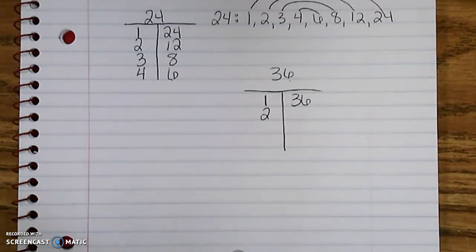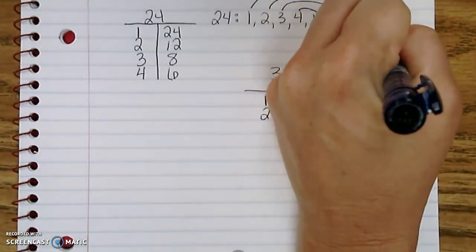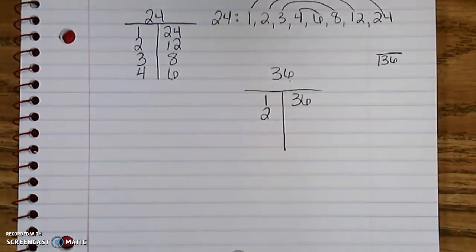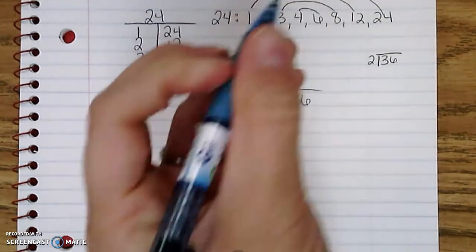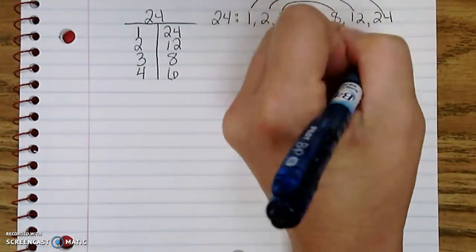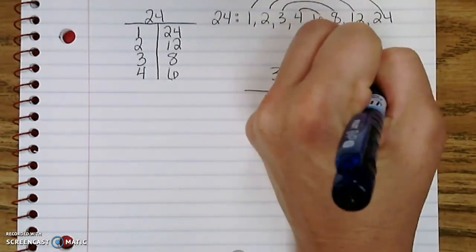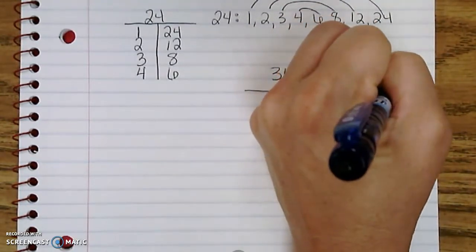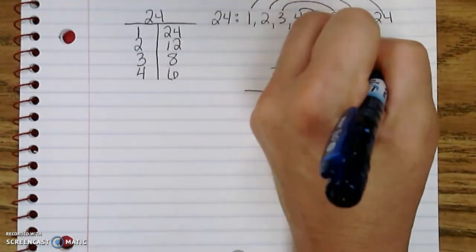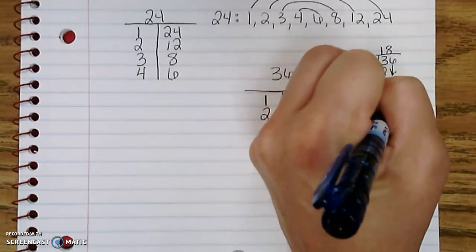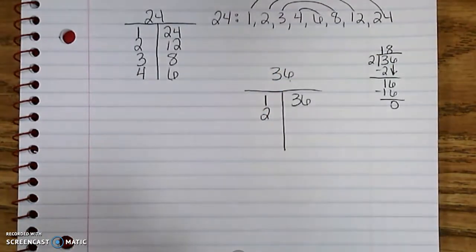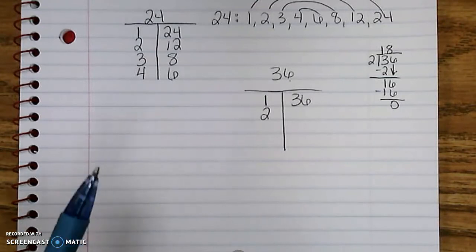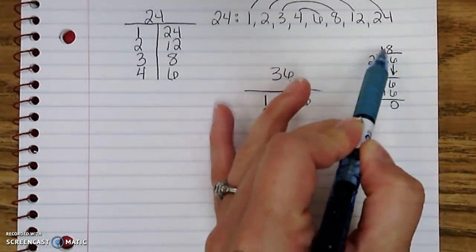Now if I don't know 2 times what equals 36, I might have to do some scratch work over here and do some division to find out what the other factor that goes with the pair of 2 is. So I would do just some division: 2 goes into 3 one time, 1 times 2 is 2, subtract that you get a 1, I bring down my 6, 2 goes into 16 eight times, 8 times 2 is 16, and I'm done. So the other half of this pair is 18. So 2 times 18 equals 36.